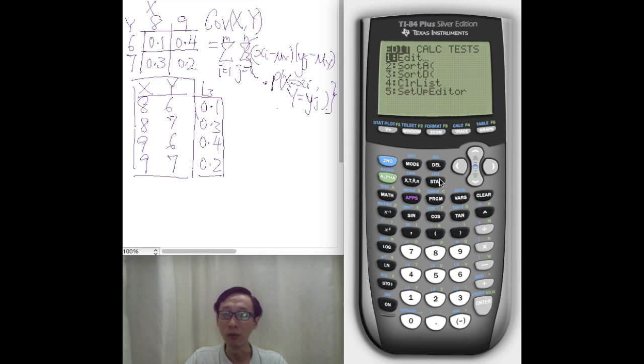we will invoke the calculator's two-variable statistics again. But this time round, there's a twist. Our X is now in L4. That's not yet the twist. Our Y is in L5.